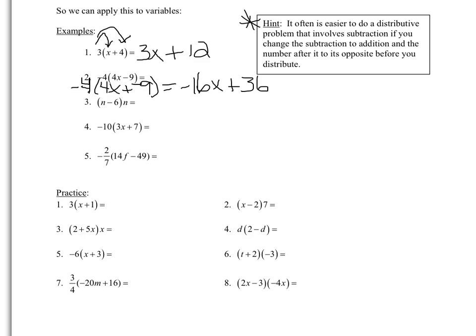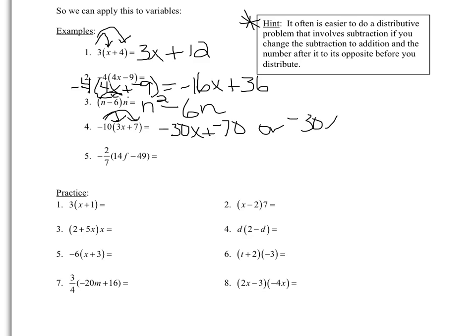Here's another example. When all the numbers are basically positive, you can just distribute. The n on the outside gets distributed into each term: n times n gives us n squared, minus n times 6 gives us 6n. For number 4, negative 10 times 3x gives negative 30x, and negative 10 times 7 gives negative 70. You could write that as negative 30x plus negative 70, or equivalently as negative 30x minus 70 — those are the same thing.